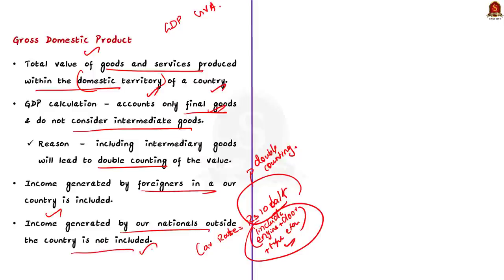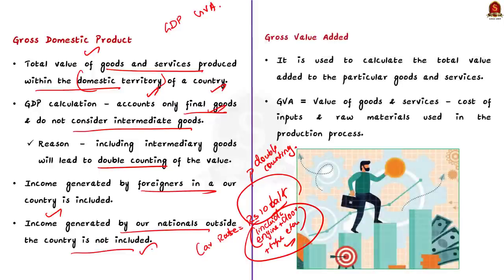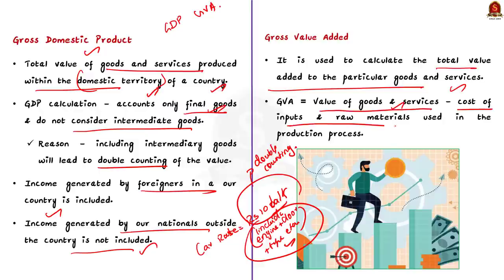GVA stands for Gross Value Added. GVA is used to calculate the total value added to particular goods and services. In simple words, GVA measures the value of goods and services produced in an economy after deducting the cost of inputs and raw materials used in the production process.